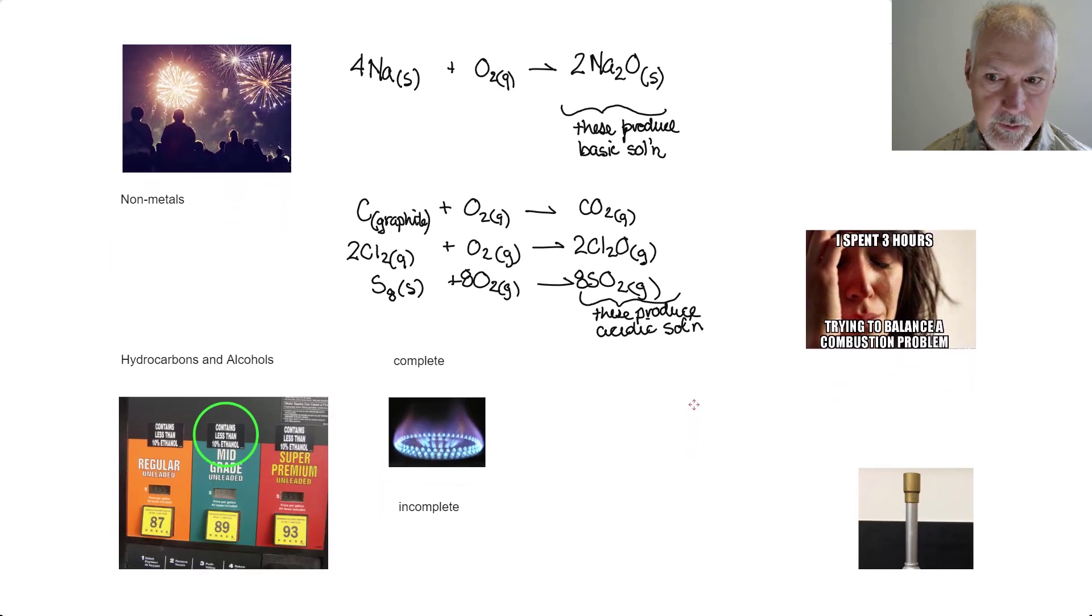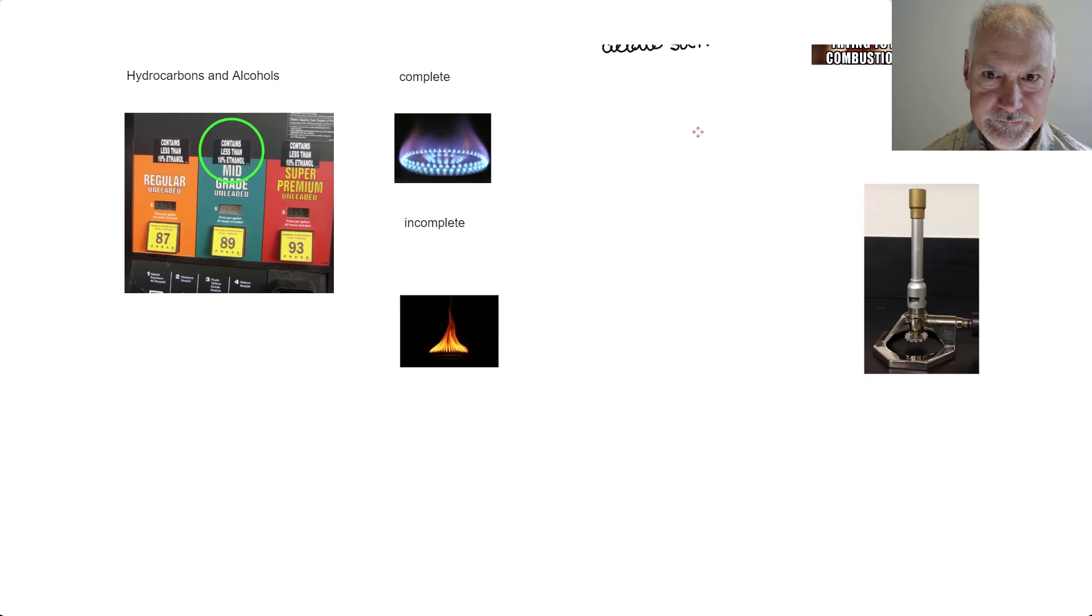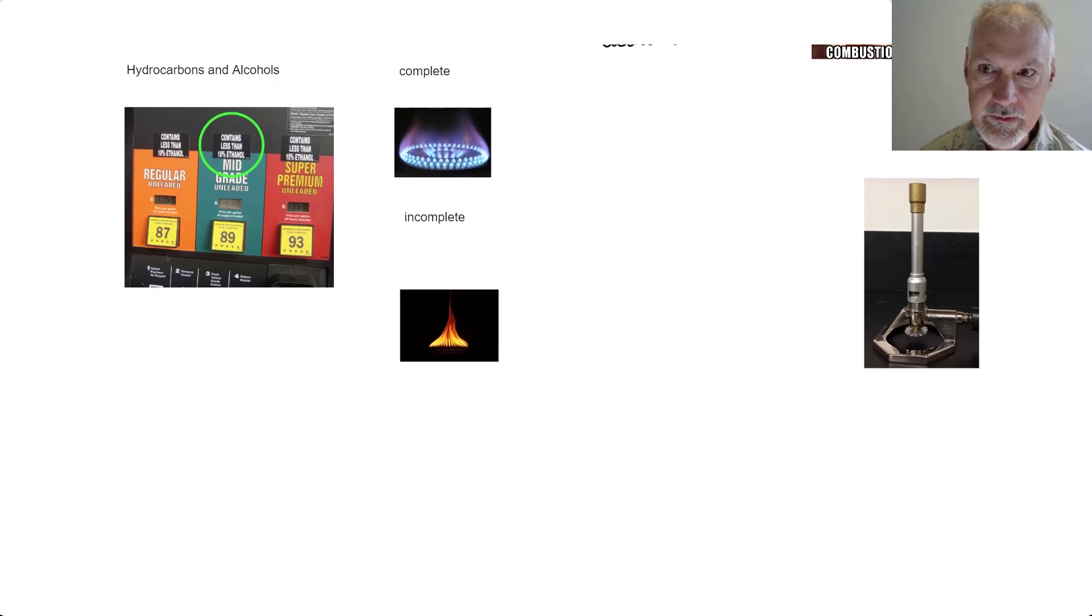Now let's take a look at our hydrocarbons and alcohols. Now, one of the reasons hydrocarbons and alcohols are sort of grouped together here is if we take a look at gasoline that's available at the pump, you may notice this sign on some of the gasoline stations. It may contain 10% ethanol. Ethanol is an alcohol, and it's mixed with a hydrocarbon. The hydrocarbon most commonly found in gasoline would have this particular formula. And our ethanol, this formula. So, we're going to look at the combustion of these, but what I'm going to show you can apply to any hydrocarbon and any alcohol.